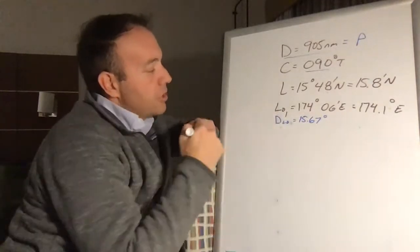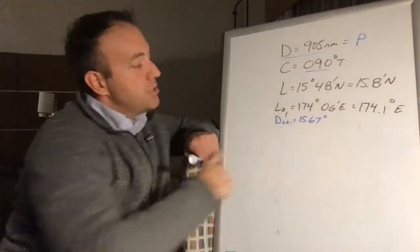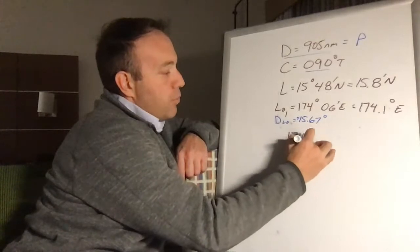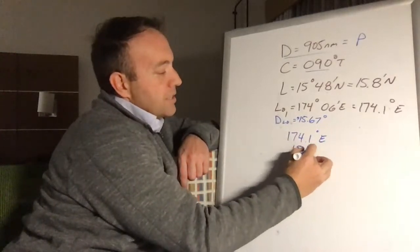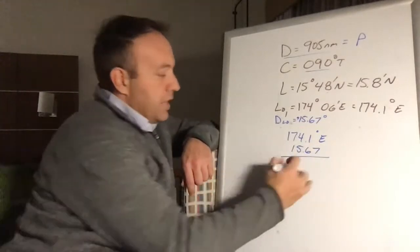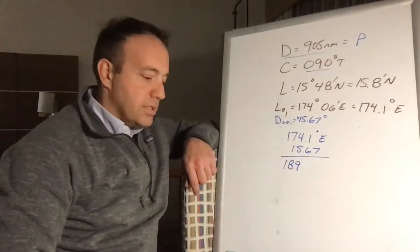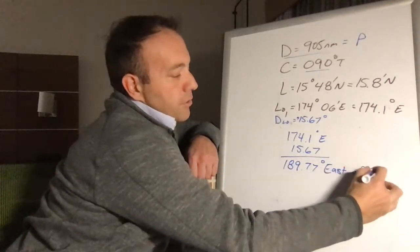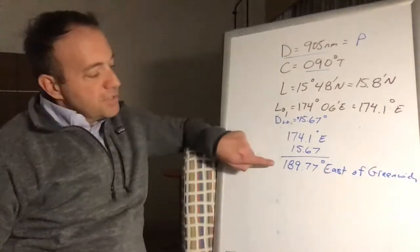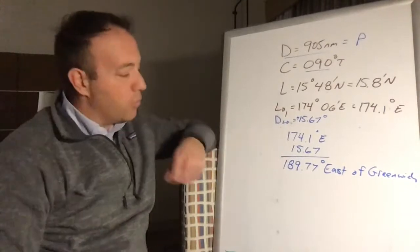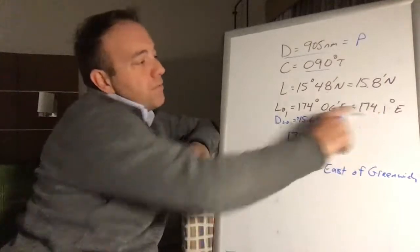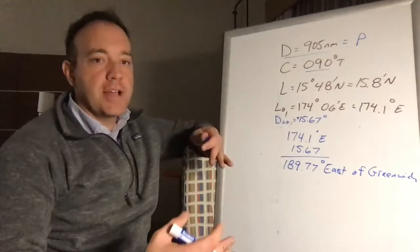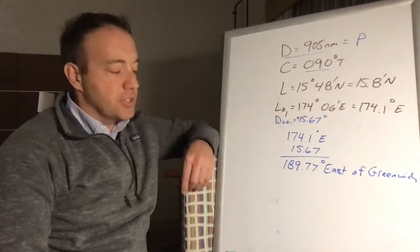We've got longitude one at 174.1 east, and difference in longitude of 15.67 degrees eastward. Adding them: 174.1 plus 15.67 equals 189.77 degrees east of Greenwich. This doesn't make sense navigationally — we can't be 189 degrees east. We started at 174.1 east, in the eastern hemisphere, and crossed the international date line. This is a tricky thing — how do we rectify that?